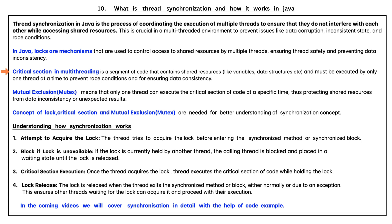A critical section in multi-threading is a segment of code that contains shared resources like variables, data structures, etc., and must be executed by only one thread at a time to prevent race conditions and ensure data consistency. Mutual exclusion means that only one thread can execute the critical section of code at a specific time, thus protecting shared resources from data inconsistency or unexpected results.